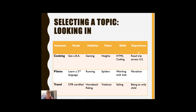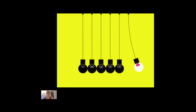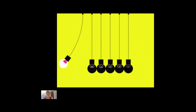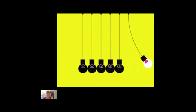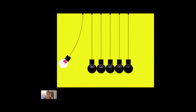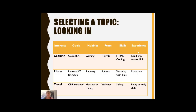So let's start with a few different brainstorming methods. The first one I like to call "looking in." This is a topic selection process that really starts with you, where you look inside of yourself to examine your own interests, goals, hobbies, maybe even fears, anxieties, skill sets you possess, and experiences.